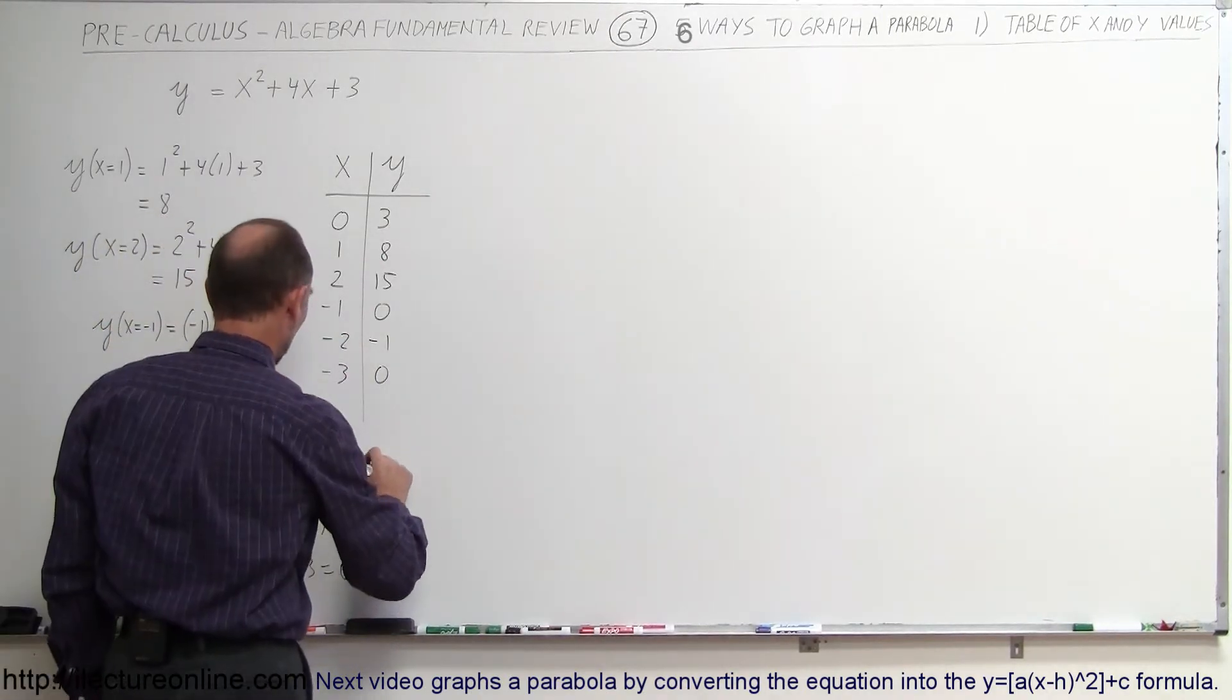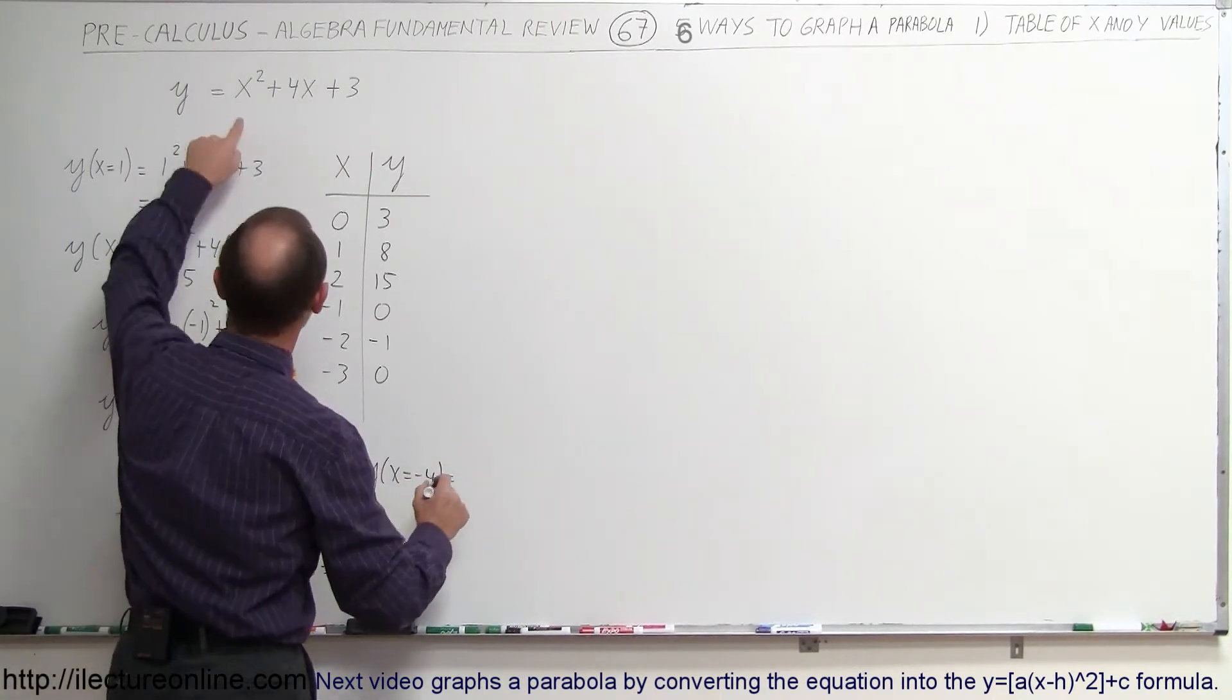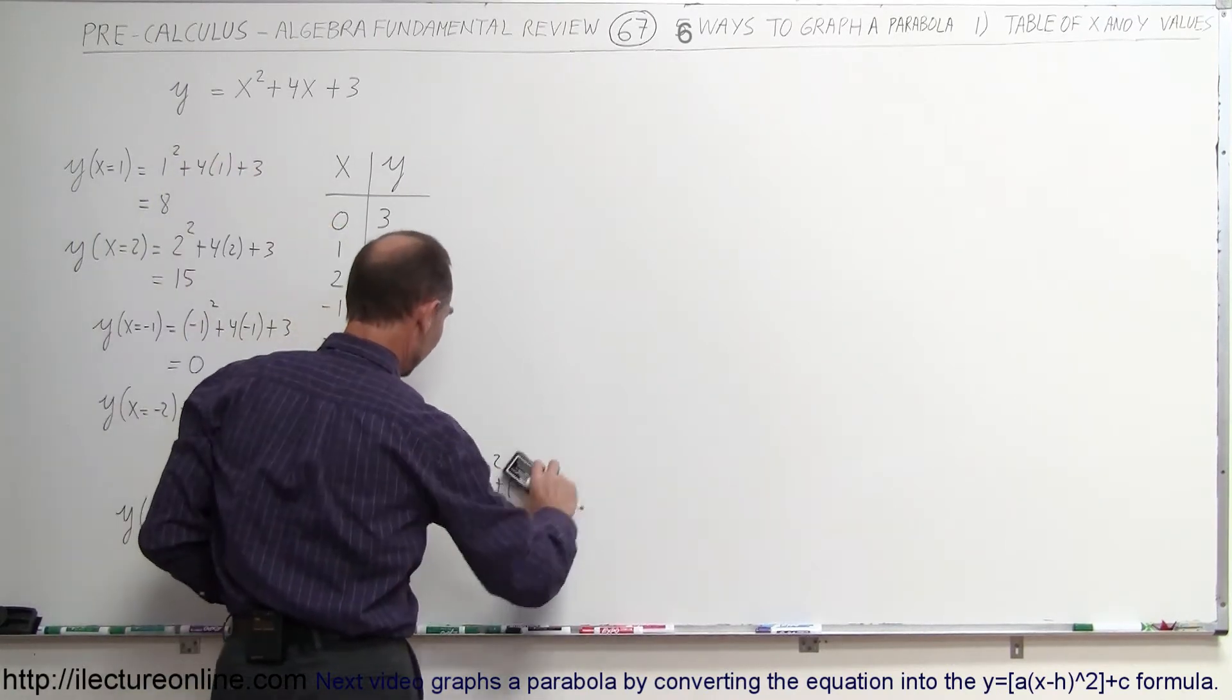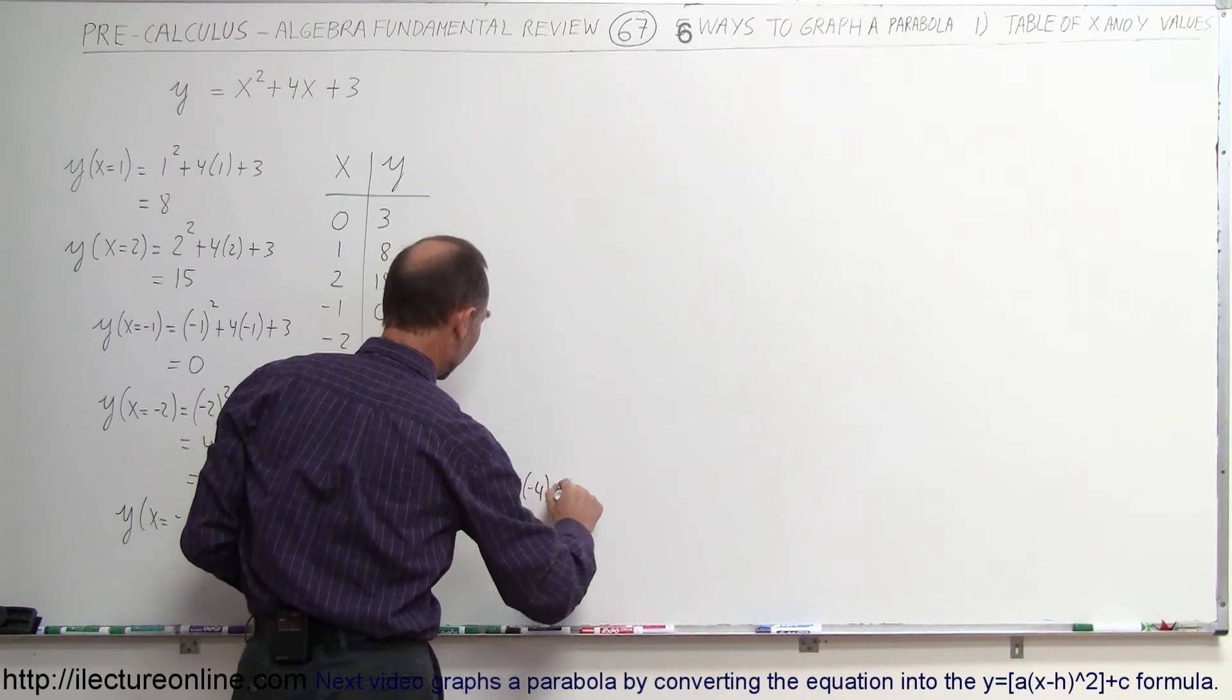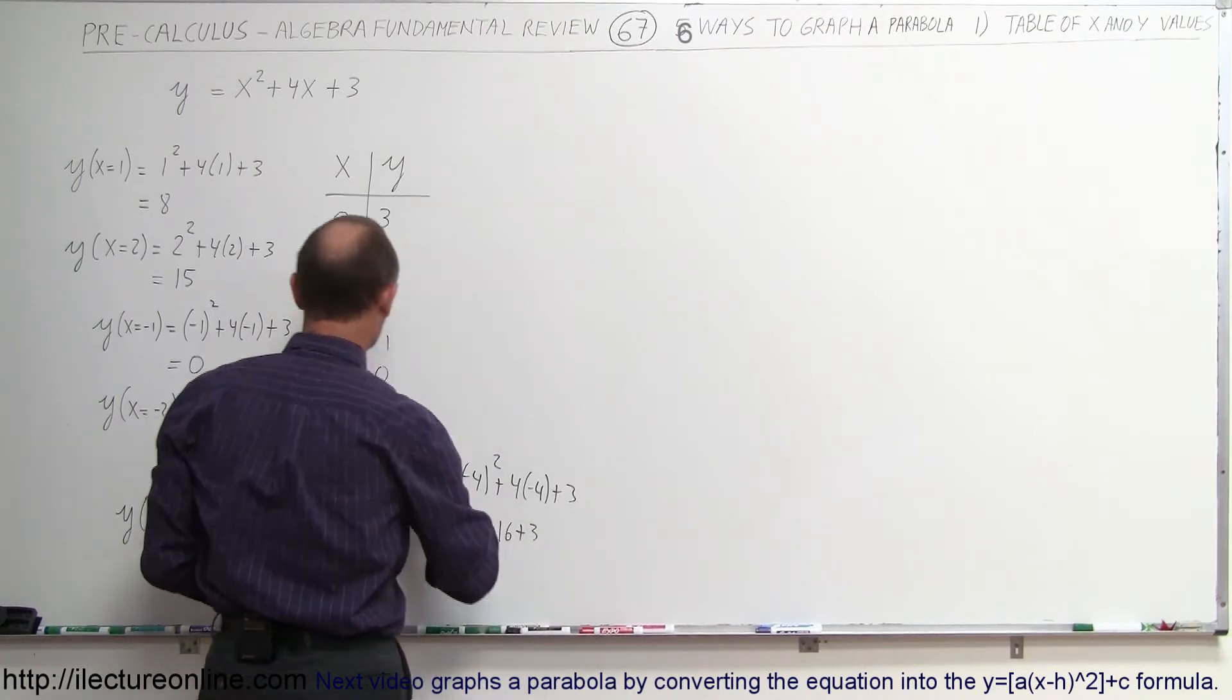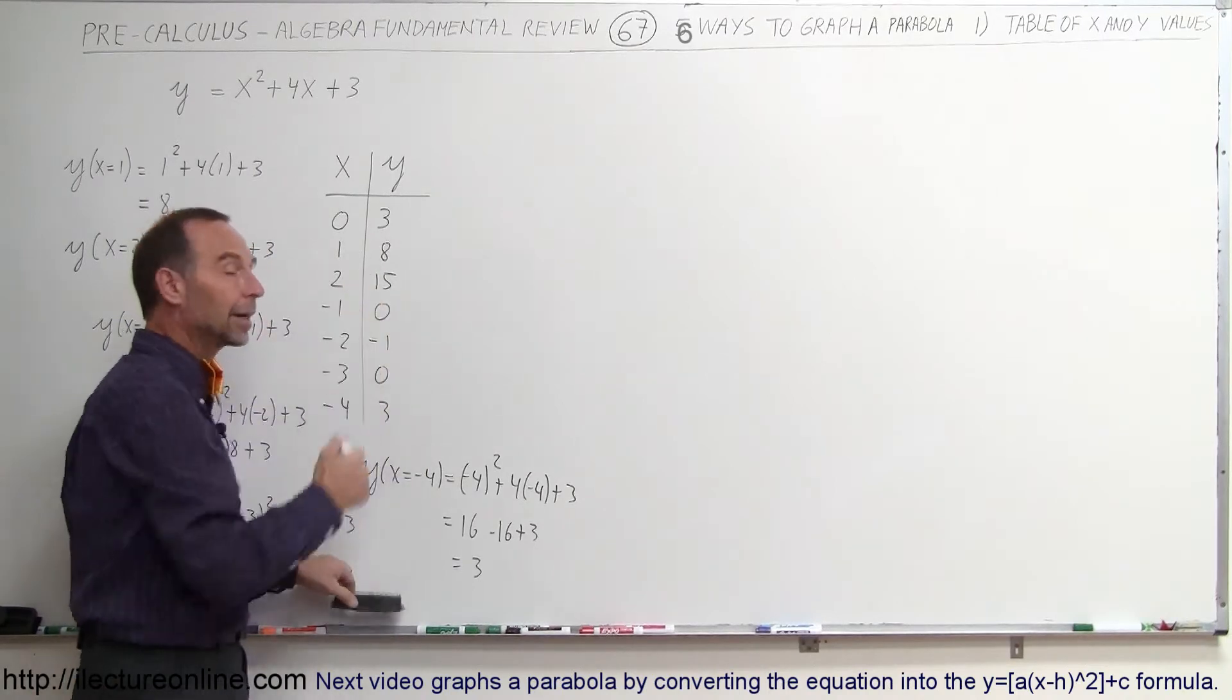So let's try one more value. y when x is equal to negative 4. That's equal to negative 4 squared plus 4 times negative 4. Always good to write it in the same correct order. Plus 3. So this would be 16 minus 16 plus 3, which is 3. So sure enough, as x becomes smaller, y becomes larger again.